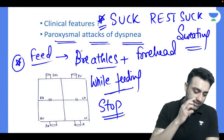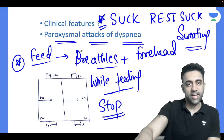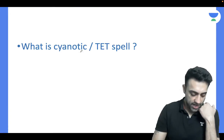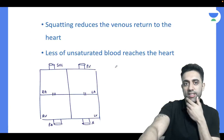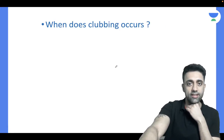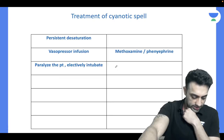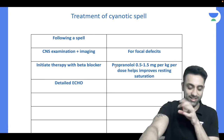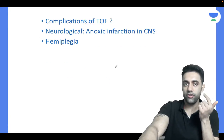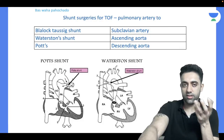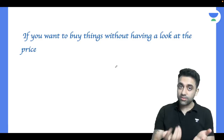In the next class at 8:30 PM, we will cover: what is a cyanotic spell, what happens in cyanotic spells, infundibular spasm, when do you see clubbing in TOF, treatment for cyanotic spells, complications of TOF, neurological complications, surgical options including the Blalock-Taussig shunt, and the Waterston shunt.